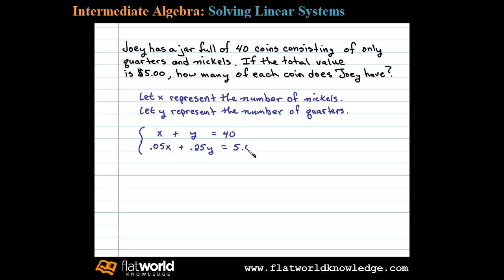Okay, so this is our setup and we can solve it any way we choose. In this case, I'll choose the elimination method. Let's multiply the first equation - we'll multiply both sides of the first equation by negative 0.05.